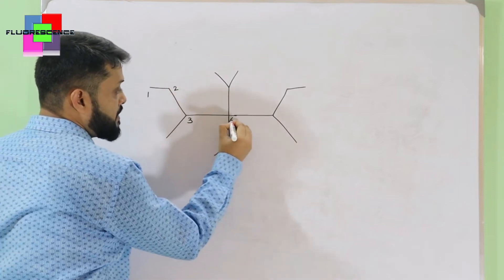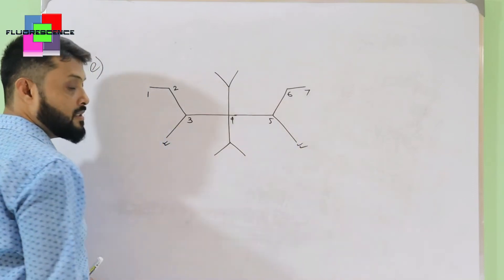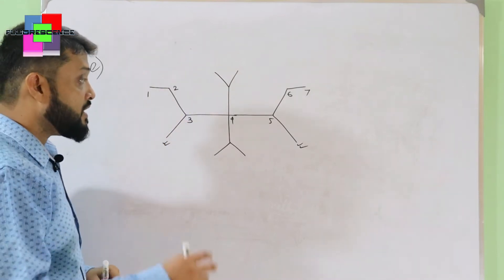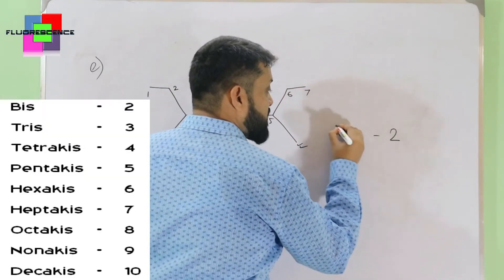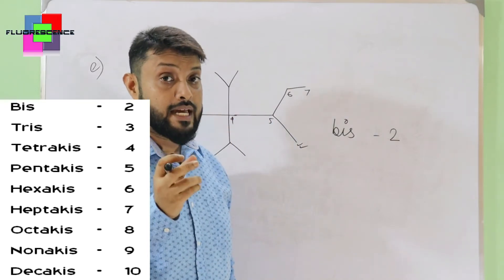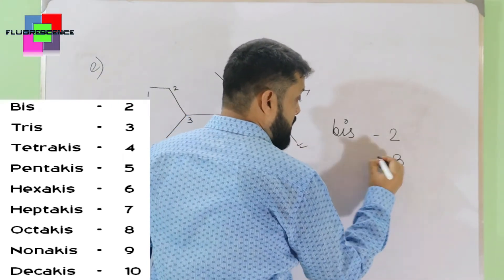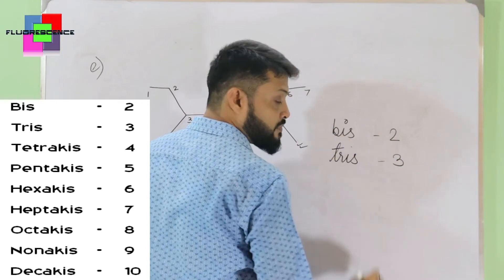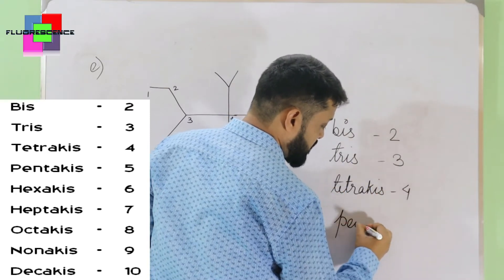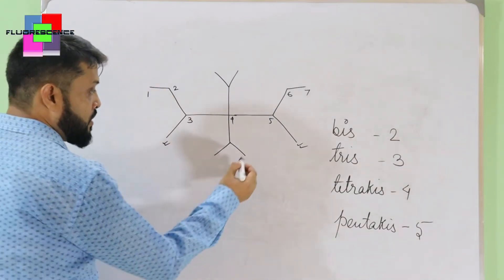In another compound, the parental chain has methyl substitutions and two identical branch-of-branching groups. When identical branched substituents are present, we use the prefix 'bis' — short for 'bijit' — instead of 'di'. For this type of branching, we use a separate set of prefixes: bis for two, tris for three, tetrakis for four, pentakis for five, and so on — hexakis, heptakis, and further.